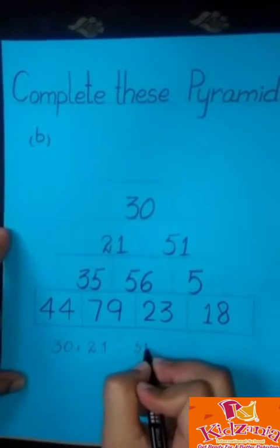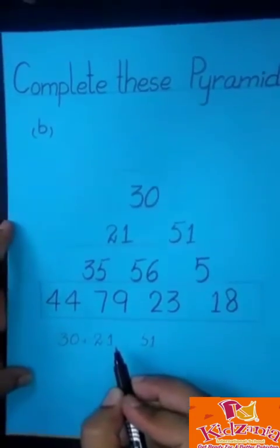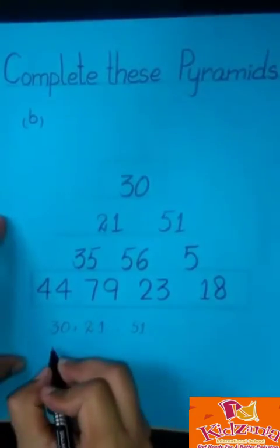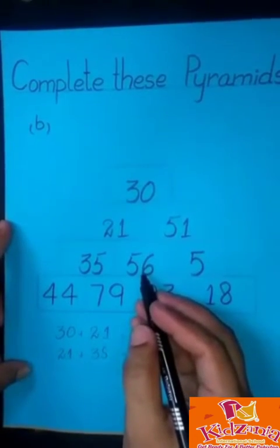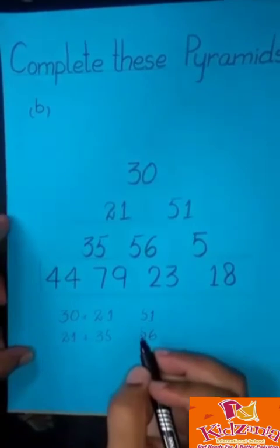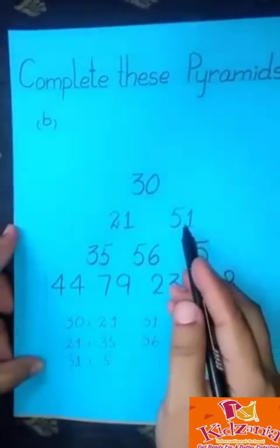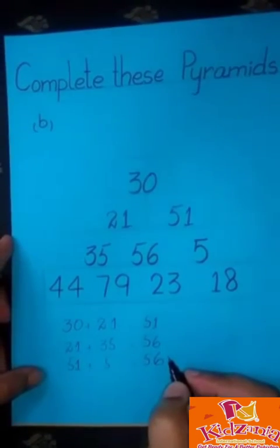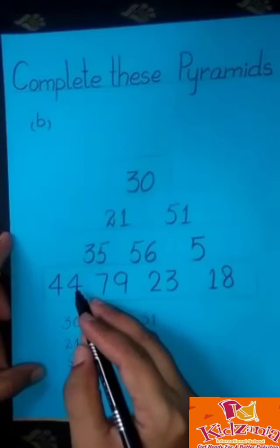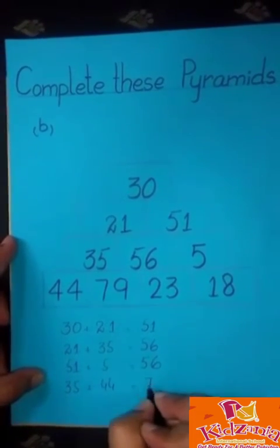And we get the answer of 51. When we add 30 with 21, we get the answer 51. This is our first equation. Our second equation is we add 21 plus 35, and we get the answer of 56. Our third equation is we add 51 plus 5, and we get the answer of 56. Our next equation is we add 35 plus 44, and the answer is 79.